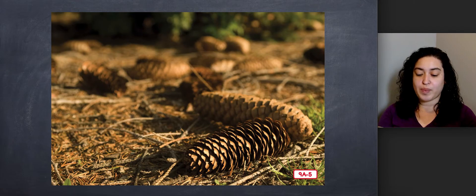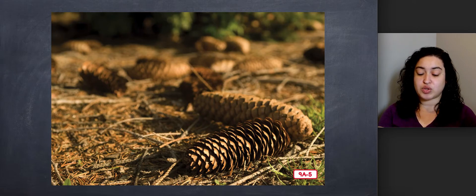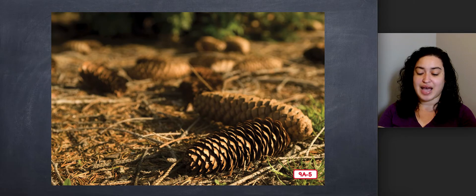When a cone opens on the ground, the seeds fall out and are spread by the wind. If a seed falls into the soil and has the right amount of food, water, air, and light, it might grow into a seedling and then a sapling. Remember, a sapling is a baby tree.